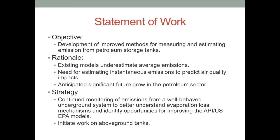One of the weaknesses in the existing API algorithms is that, if you read the documentation, they're recommended for use in developing emission inventories for assessing annual average emissions, but not for designing vapor control systems and not for determining instantaneous emission rates. If you're doing an air quality assessment and trying to predict impacts on receptors, you need to understand what the peak emissions will be and what the variability in those emissions would be. That was part of what we were trying to address as well.